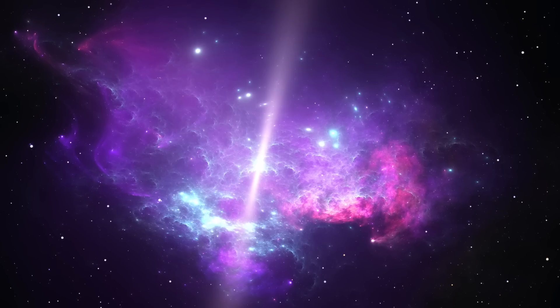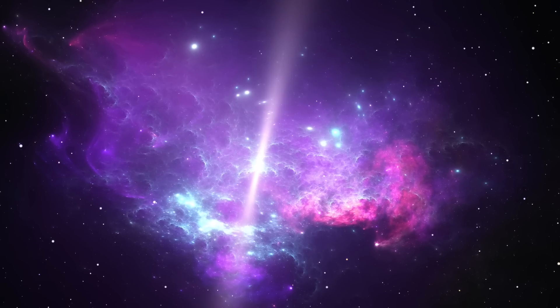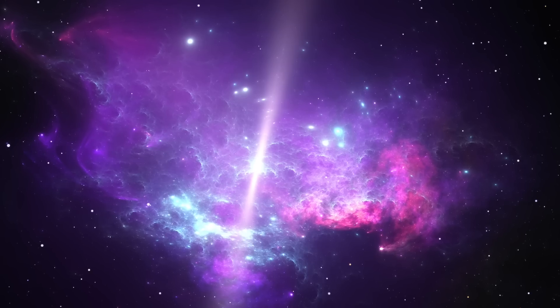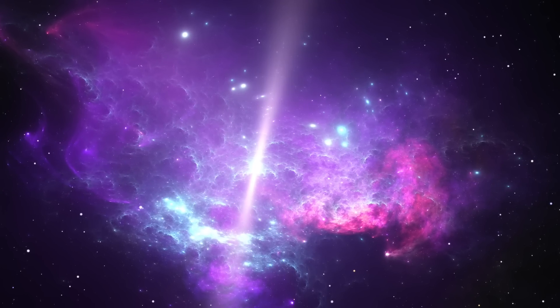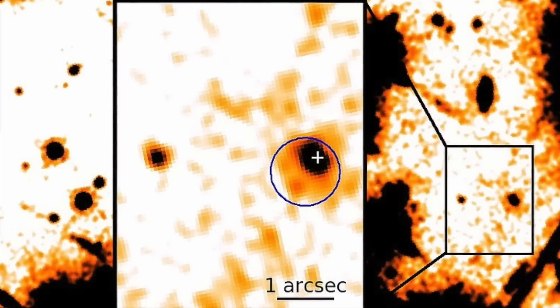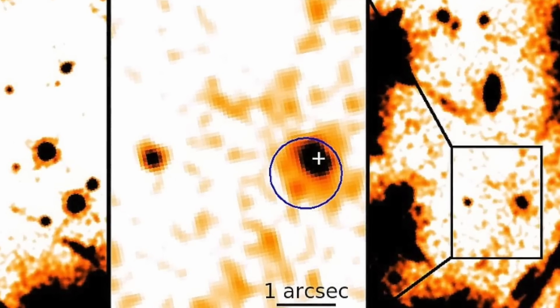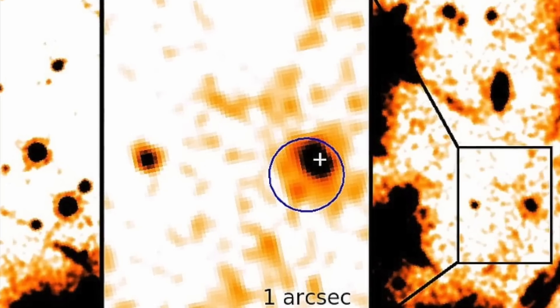When a supernova explodes, it sometimes leaves behind neutron stars. Neutron stars are an estimated 1.4 times denser than our sun but only 12.4 miles in diameter. Space.com claims that at such an insane density, a teaspoon would weigh a billion tons. Occasionally, neutron stars spin at high speeds and release electromagnetic radiation such as x-rays. These neutron stars are known as pulsars. RXJ 0806.4-4124 is the name of the neutron star emitting infrared light, and studying it might help develop our understanding of how neutron stars work.